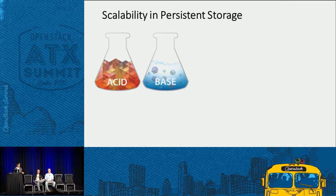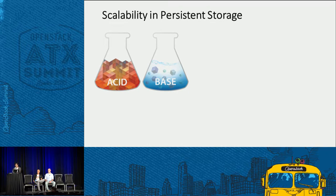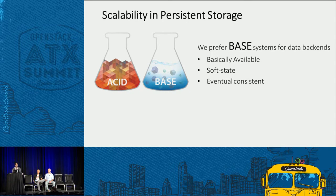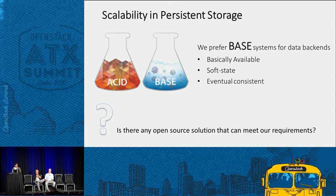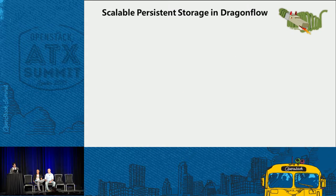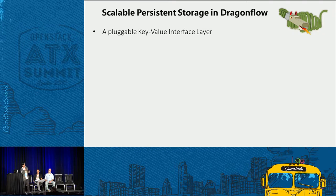There are two kinds of data storage systems. The ACID system has strong semantics — for example, the relational database. And the BASE system is almost like the NoSQL servers, which are key-value stores. According to our experience, we prefer BASE systems for data backends. BASE basically means basically available, with a softer state, and which is eventually consistent. In Dragonflow, we implemented a pluggable key-value interface layer that can plug in key-value data stores — currently we support ETCD, RAMCloud, ZooKeeper, and Redis.